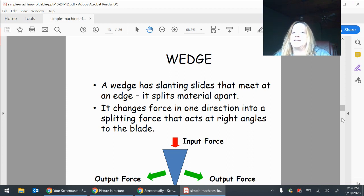Wedge. A wedge is slanting sides that meet at an edge. It splits material apart. It changes force in one direction into a splitting force that acts at right angles to the blade. There's the input force, the top going down, and the output force is where it actually would split.